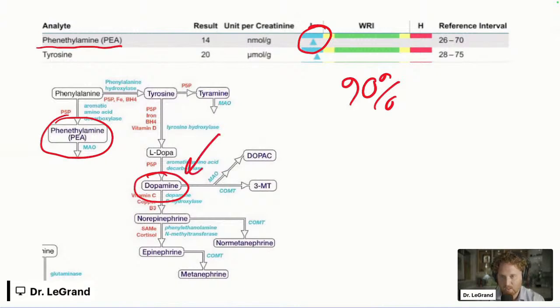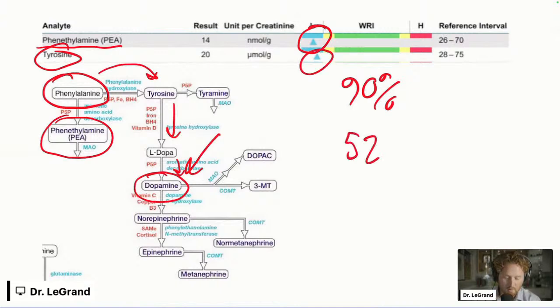Why else this is also important is because this excitatory neurotransmitter helps with motivation, drive, and focus. But the other thing is also looking at phenylalanine, which is an amino acid that helps make tyrosine and then from tyrosine to L-DOPA and then L-DOPA to dopamine. We also found that 52% were low in tyrosine, and that's what helps make dopamine.